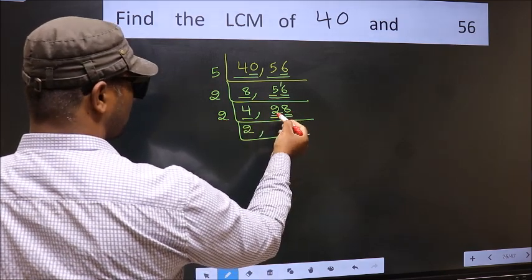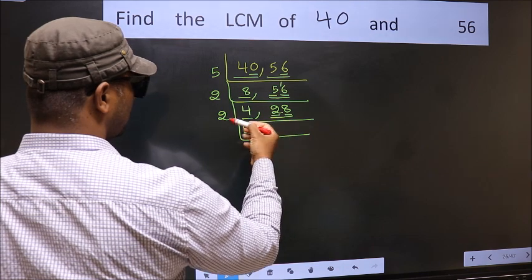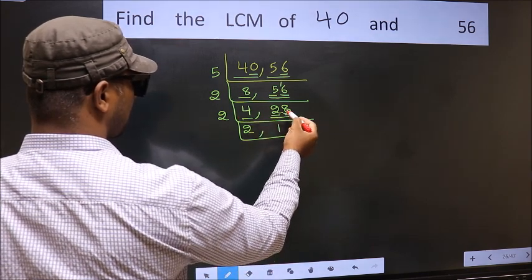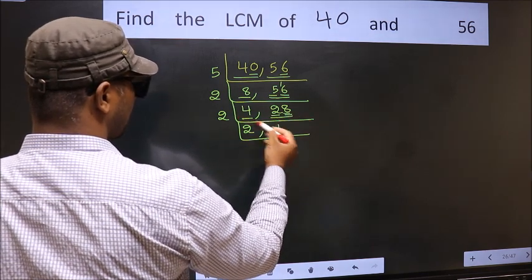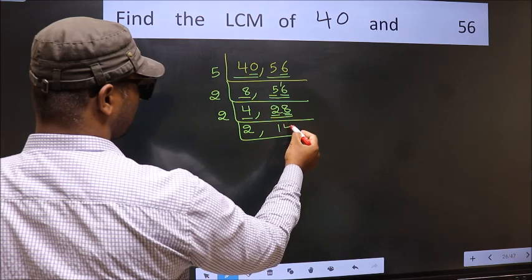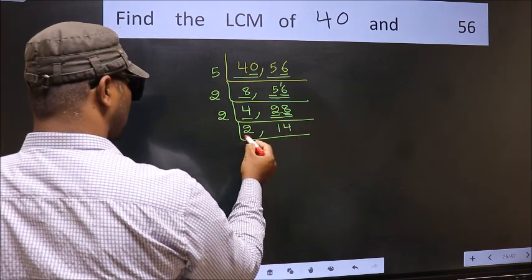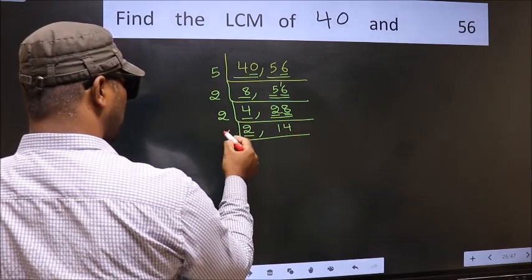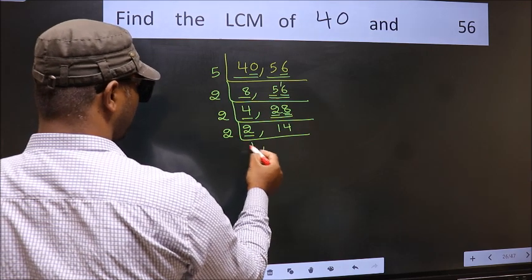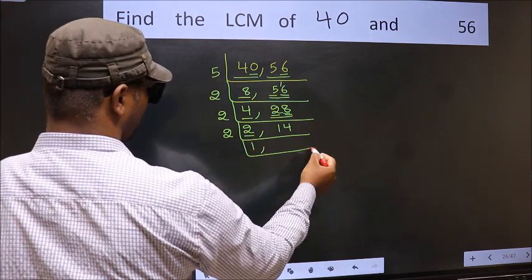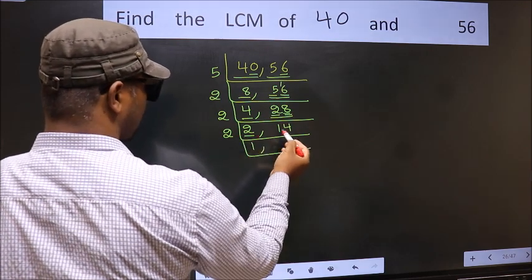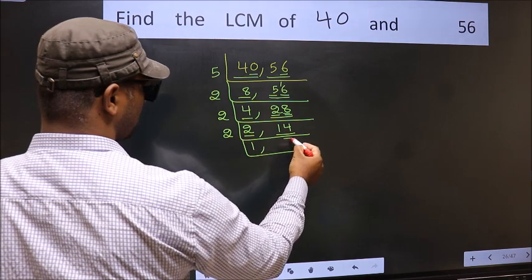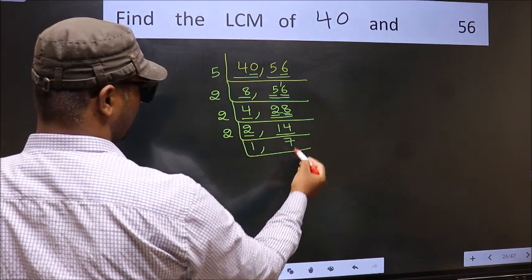The first number is 2. When do we get 2 in the 2 table? 2 ones are 2. The other number is 8. When do we get 8 in the 2 table? 2 fours are 8. Now here we have 2. 2 is a prime number, so 2 ones are 2. The other number is 14. When do we get 14 in the 2 table? 2 sevens are 14.